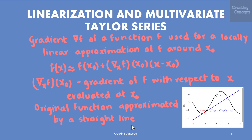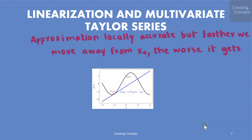Now let us look into linearization and multivariate Taylor series. The gradient of a function f is often used for a locally linear approximation of f around x₀: f(x) ≈ f(x₀) + ∇f(x₀)ᵀ(x − x₀). The figure here shows a linear approximation of a function, where the original function f is linearized at x₀ = −2 using the first order Taylor series expansion, approximated by a straight line. This approximation is locally accurate, but the farther we move away from x₀, the worse the approximation gets.